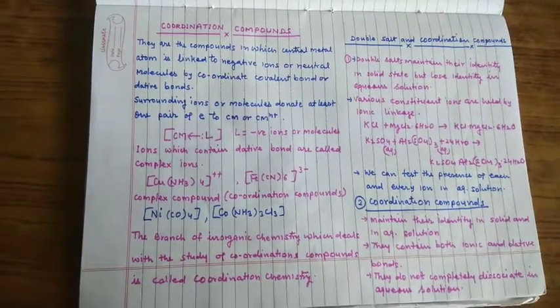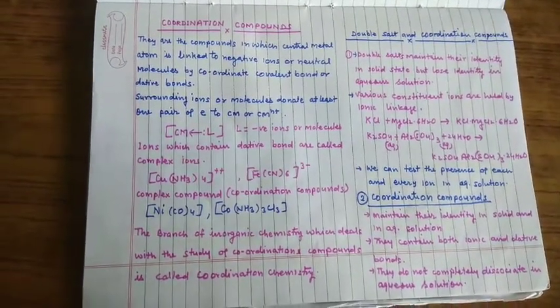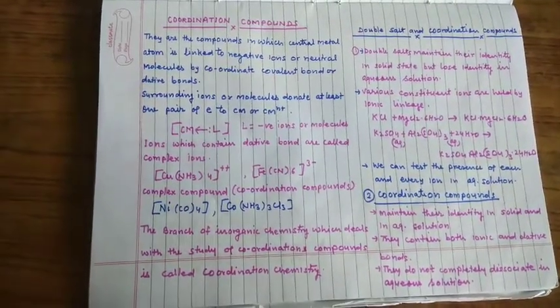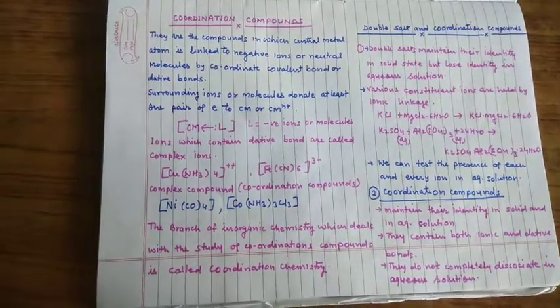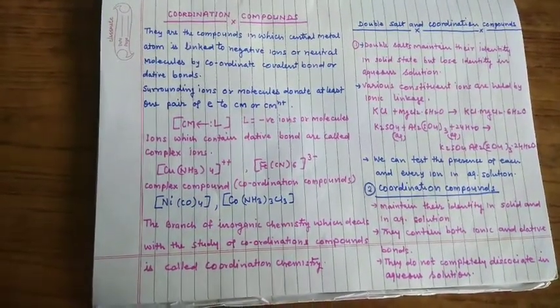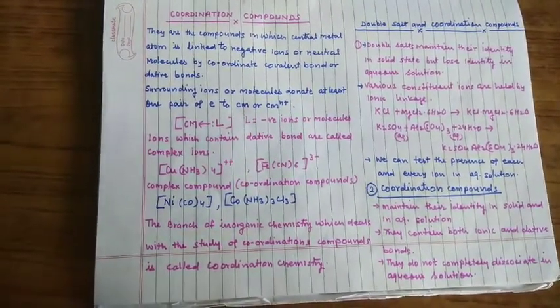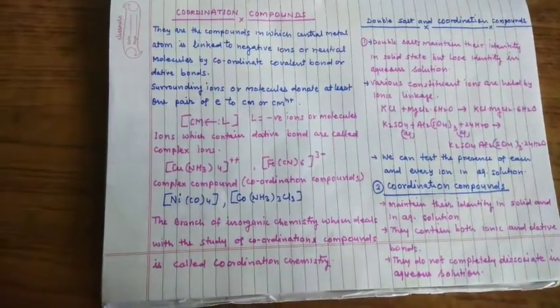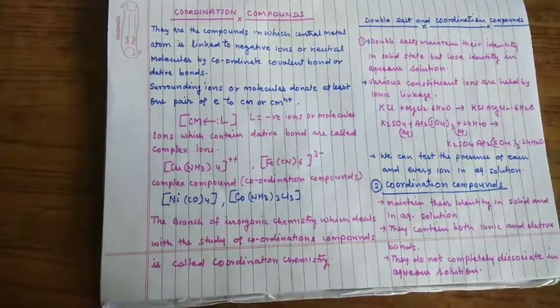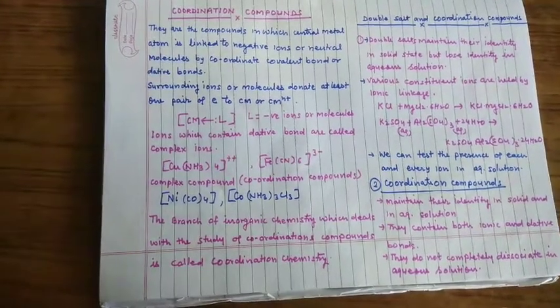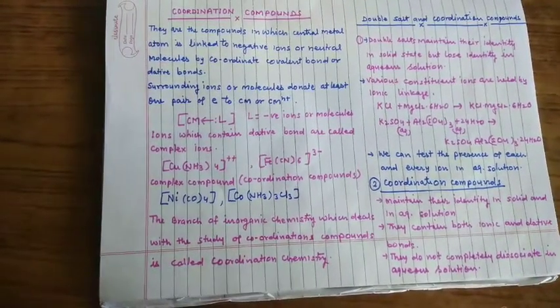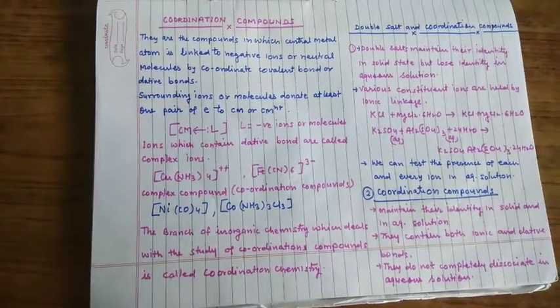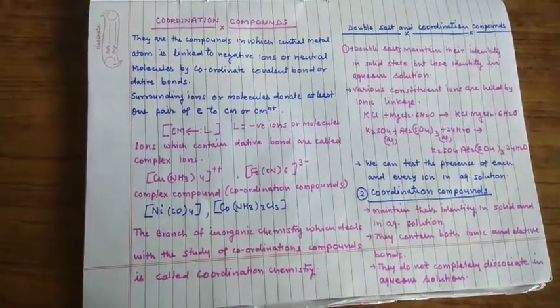Double salt as the name indicates means two, so they are formed by combination of two normal salts. Coordination compounds are also prepared from two normal salts or one salt and one compound but how these two normal salts interact to form double salt or coordination compound. What is the difference between these two combination compounds?